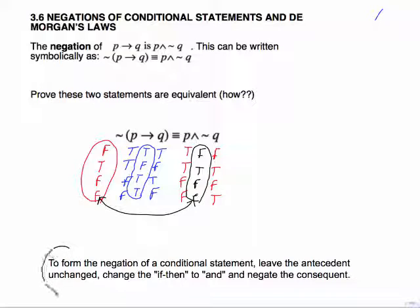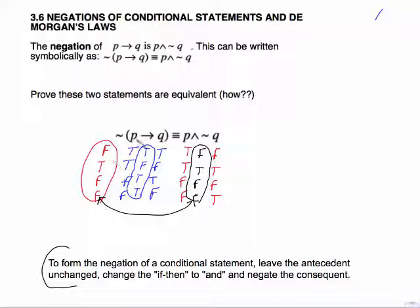This is very helpful to memorize or write on your cards. In words: to form the negation of a conditional statement, leave the antecedent unchanged, change the if-then to AND, and negate the consequent. It may sound complicated, but it really is not. You keep this part the same — that's P — change the conditional to AND, and negate the consequent.